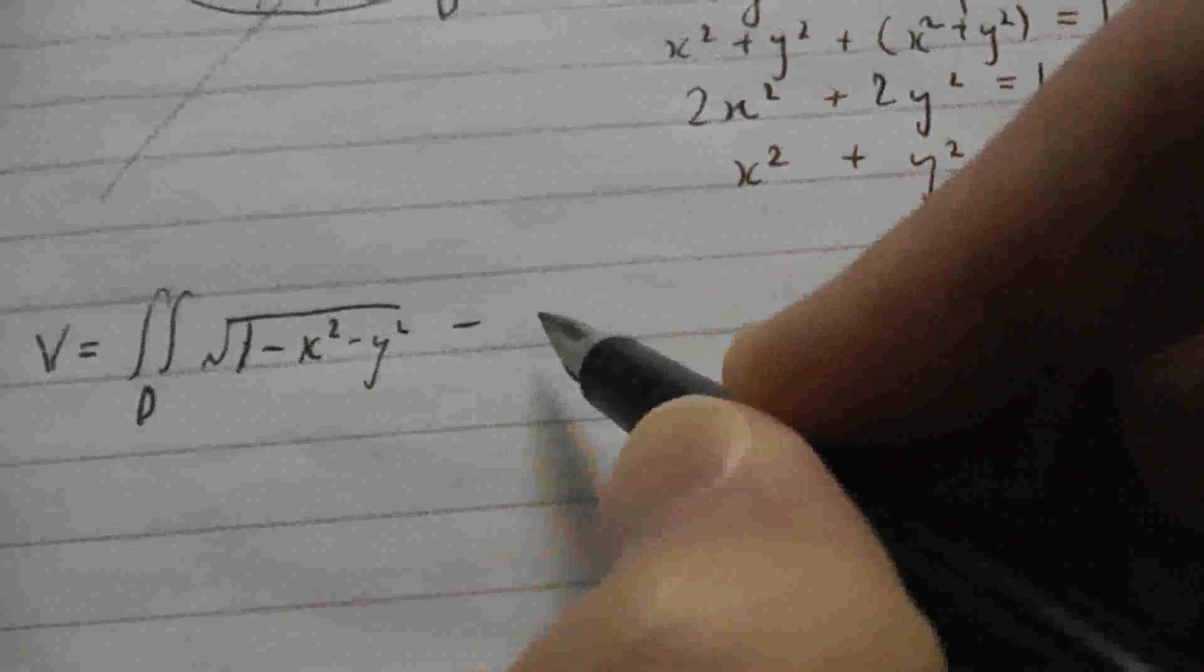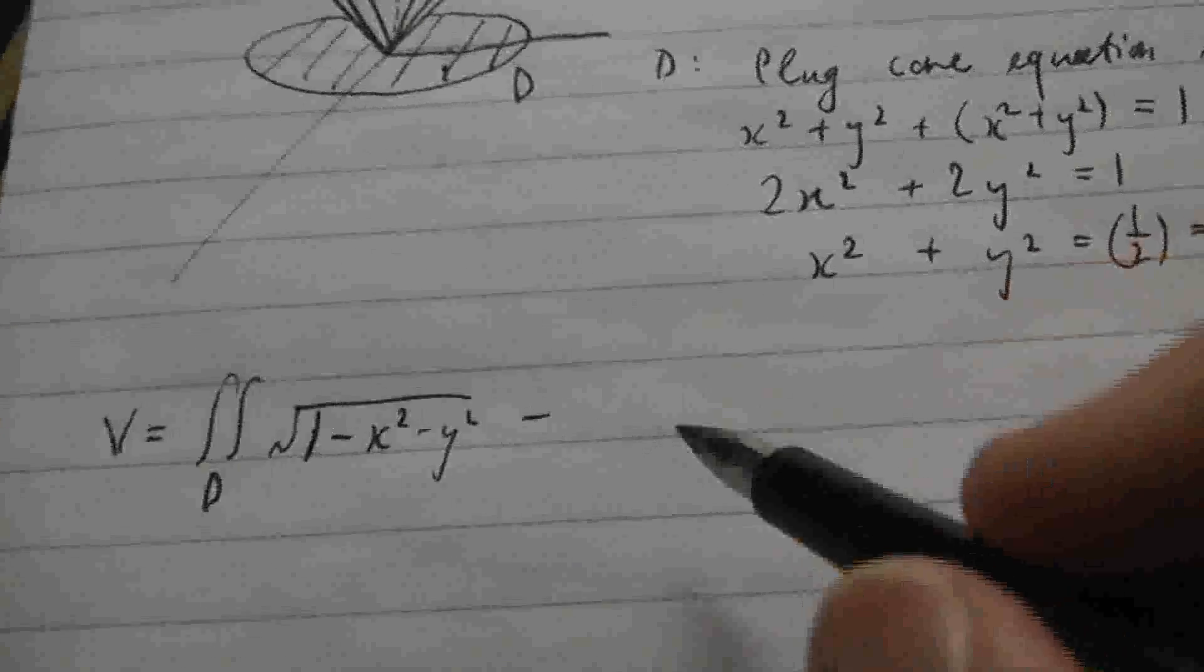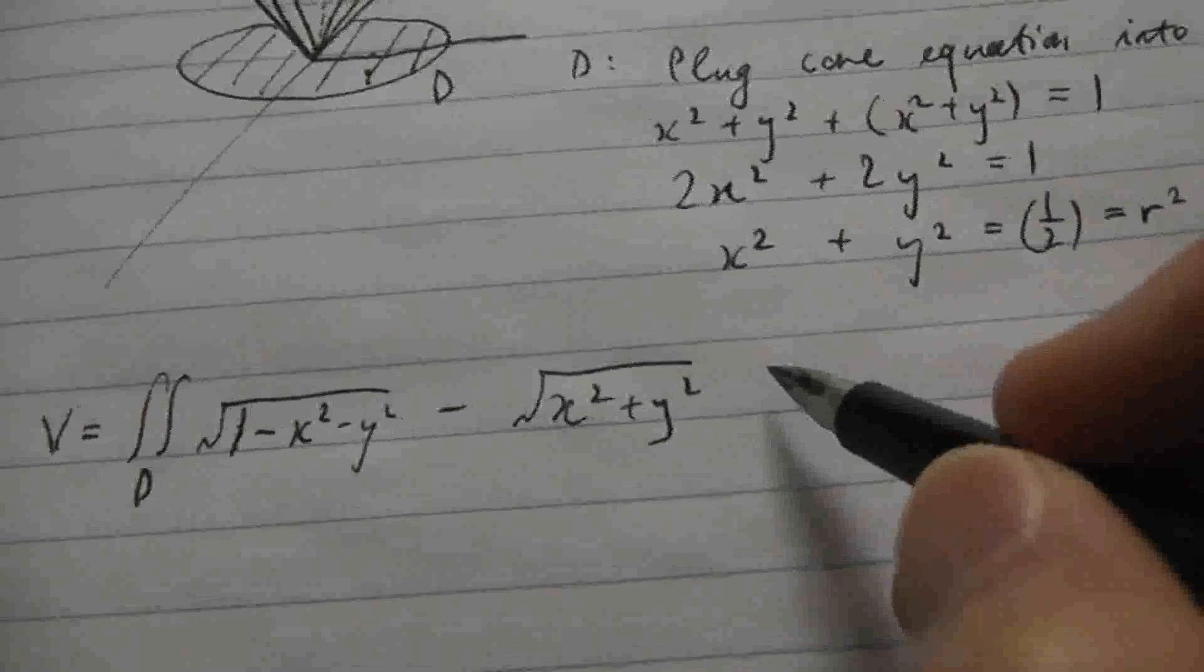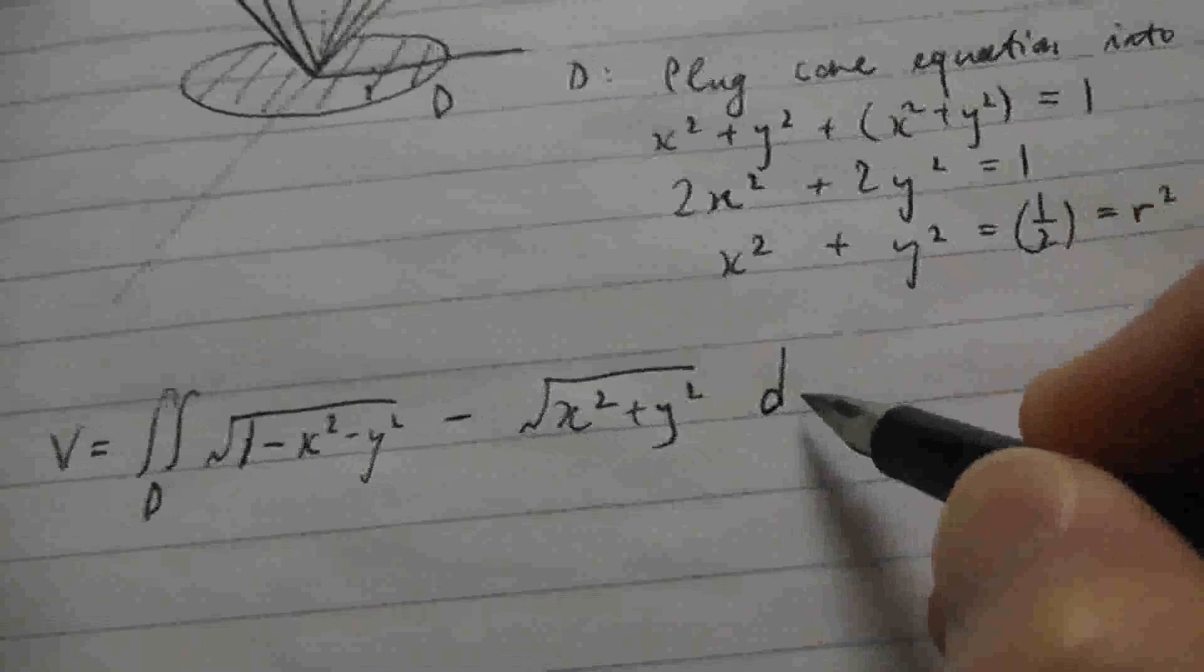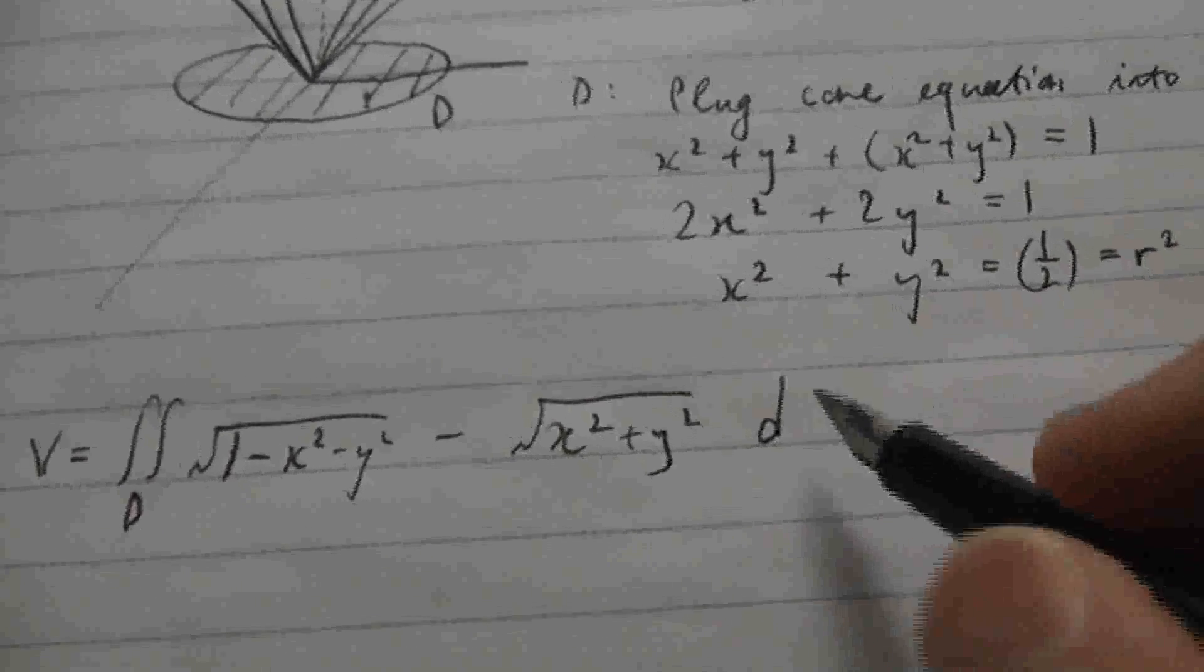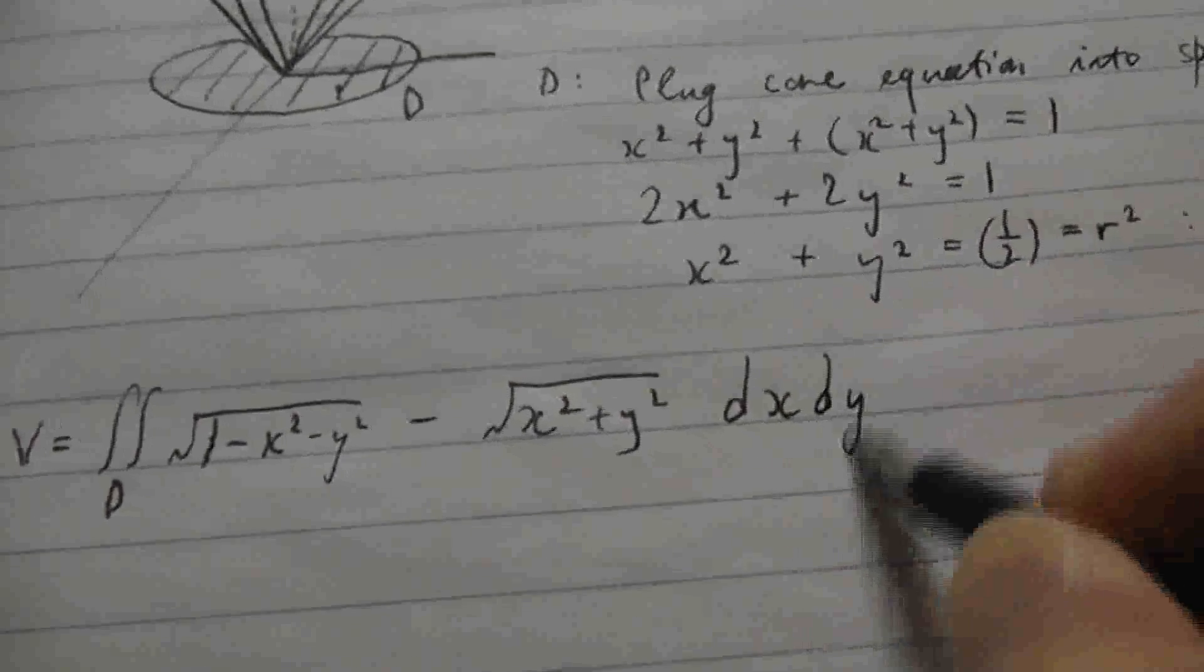So now we know the region over which we're going to be integrating. It's the circular region in the xy plane of radius 1 over root 2. Let's see what we come up with when we plug things into our expression for the volume. So let's just leave the d as it is. z2 is the equation of the sphere. So square root of 1 minus x squared minus y squared minus the equation of the cone, which is the square root of x squared plus y squared. And then we want dA. So dA is dx dy after we've figured out which way we want to do this. It's symmetric in x and y, so it's actually going to be equivalent if we do x first or y first.